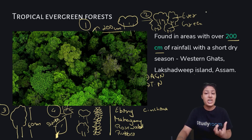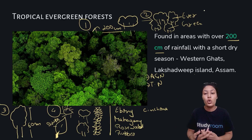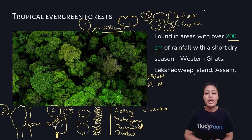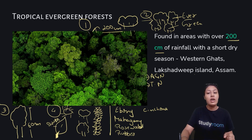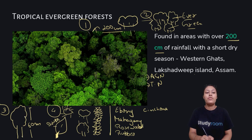Even if there is a shedding season, by the time old leaves are shedding, new leaves will already be growing. That is why you will not see any tree being pale here — a tree will have full leaves all the time. That is why we call them evergreen forests. The height of trees here is 60 meters and above.